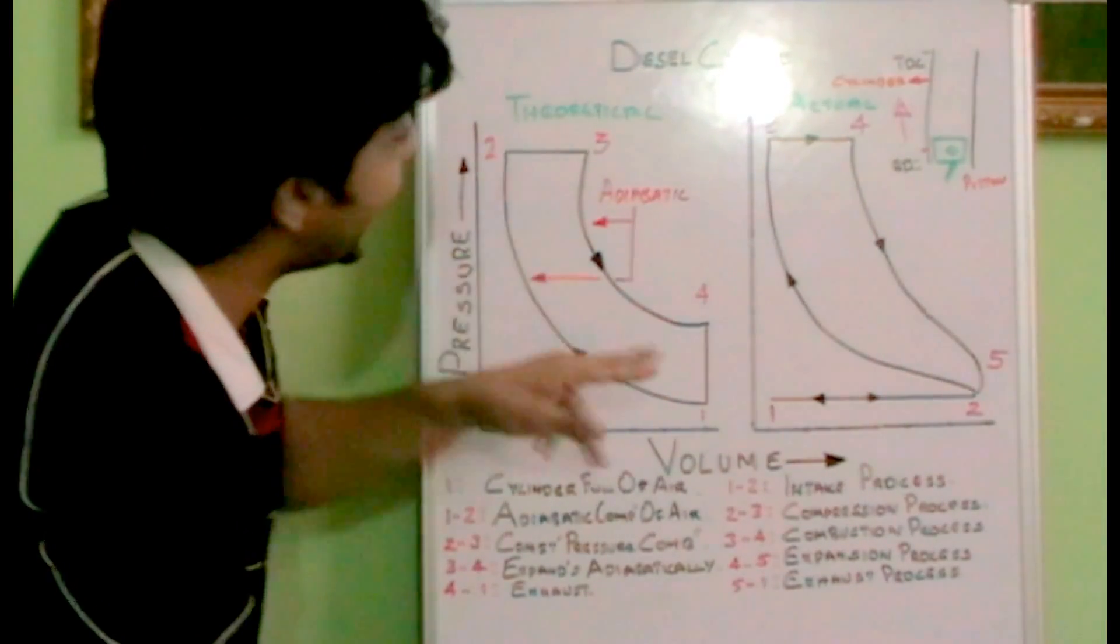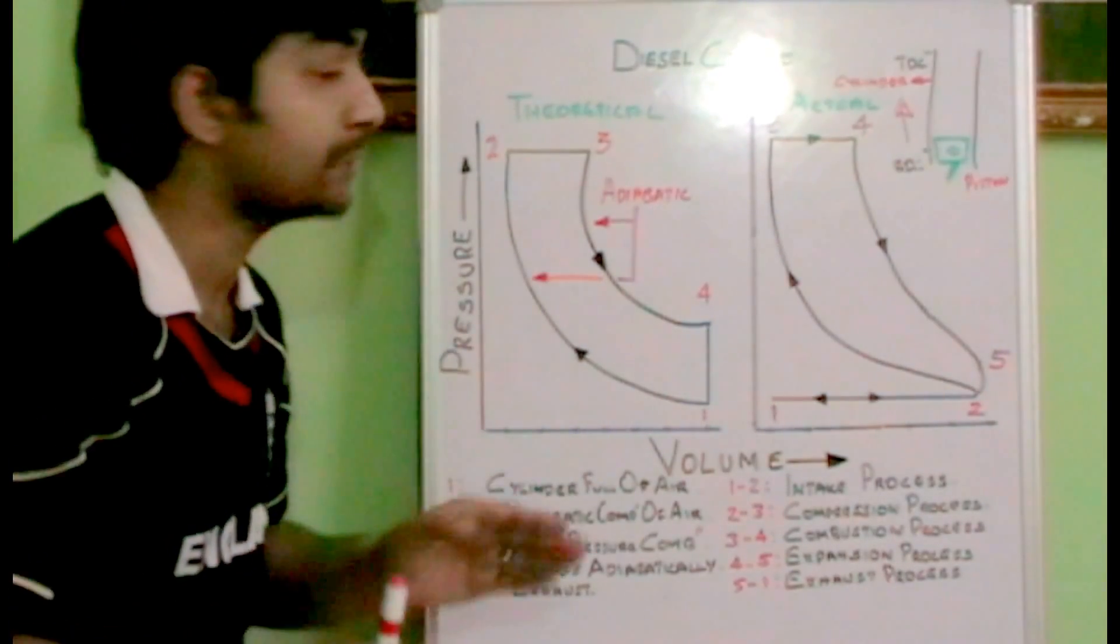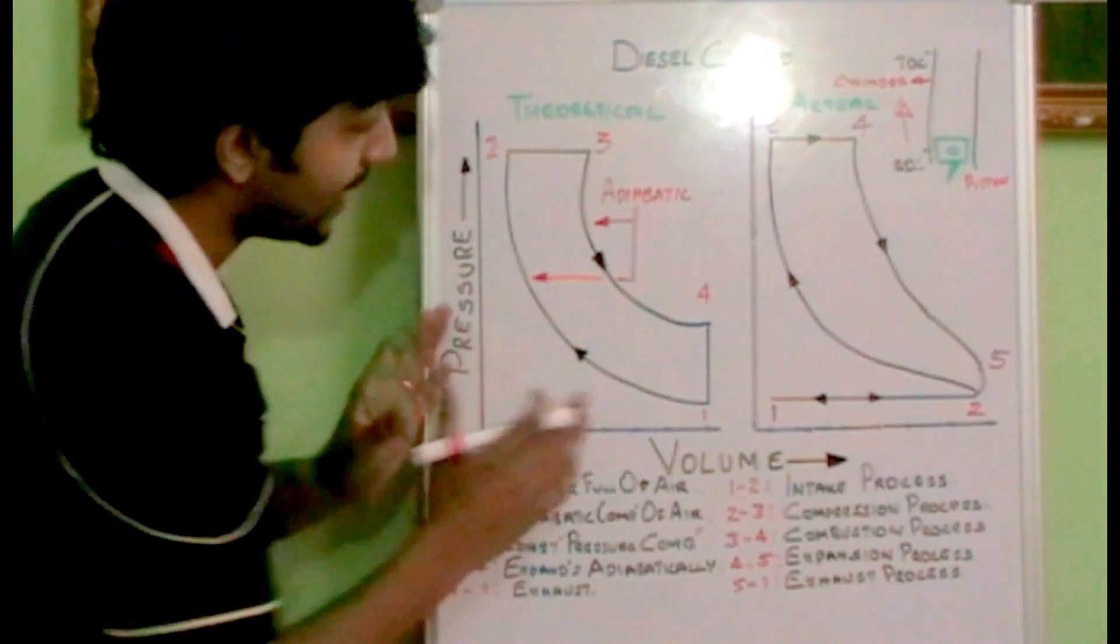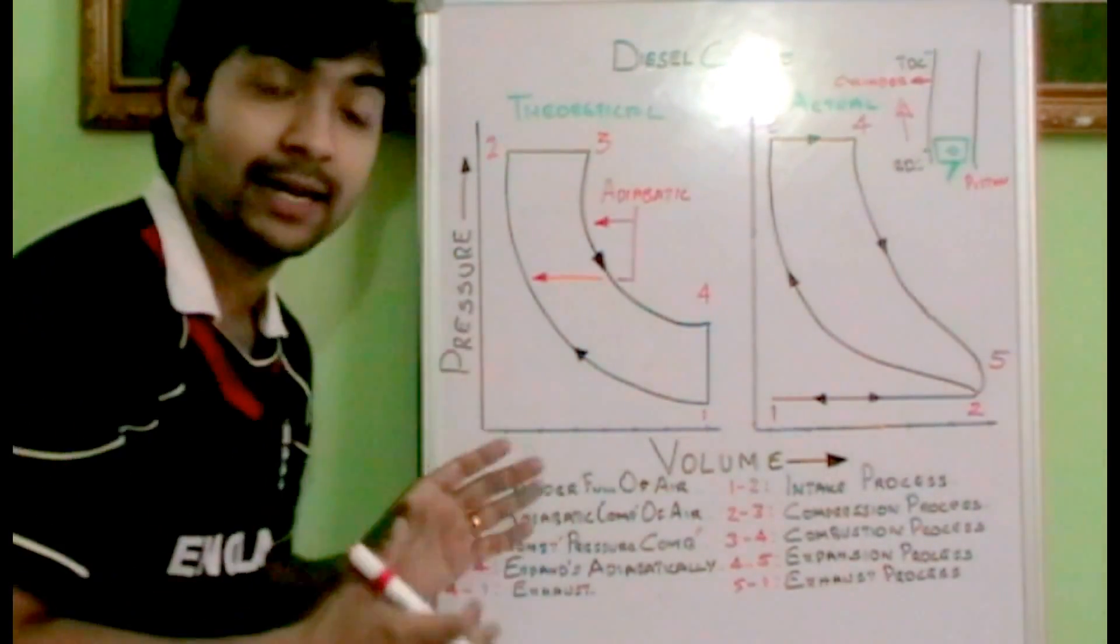From 3 to 4, again adiabatic expansion of air is happening, and in this process no heat is involved as per theory. And 4 to 1, the exhaust is happening. So that is how the theoretical background of diesel cycle has been explained.